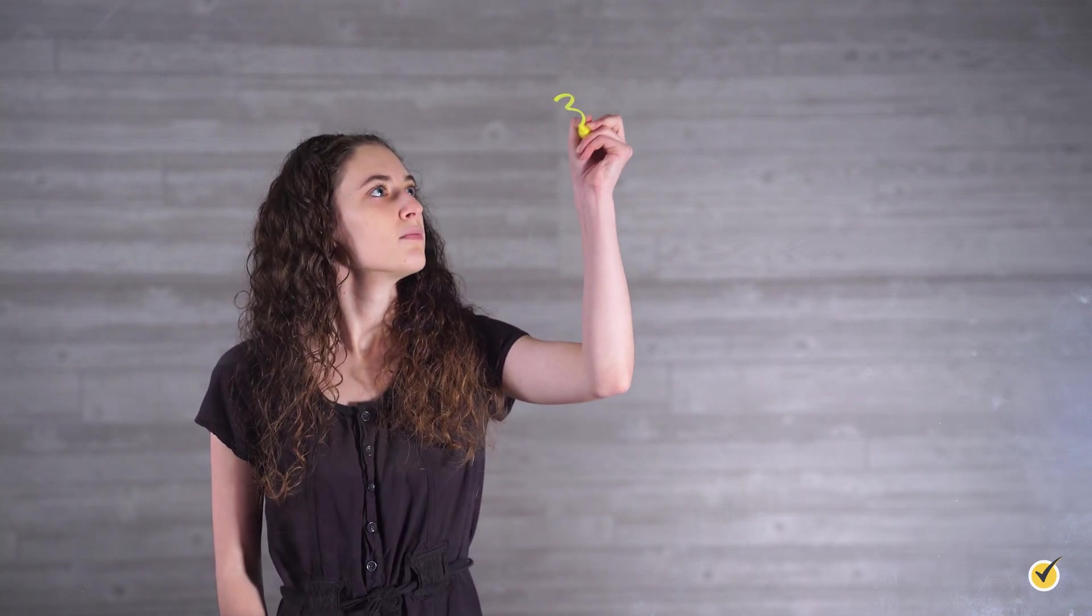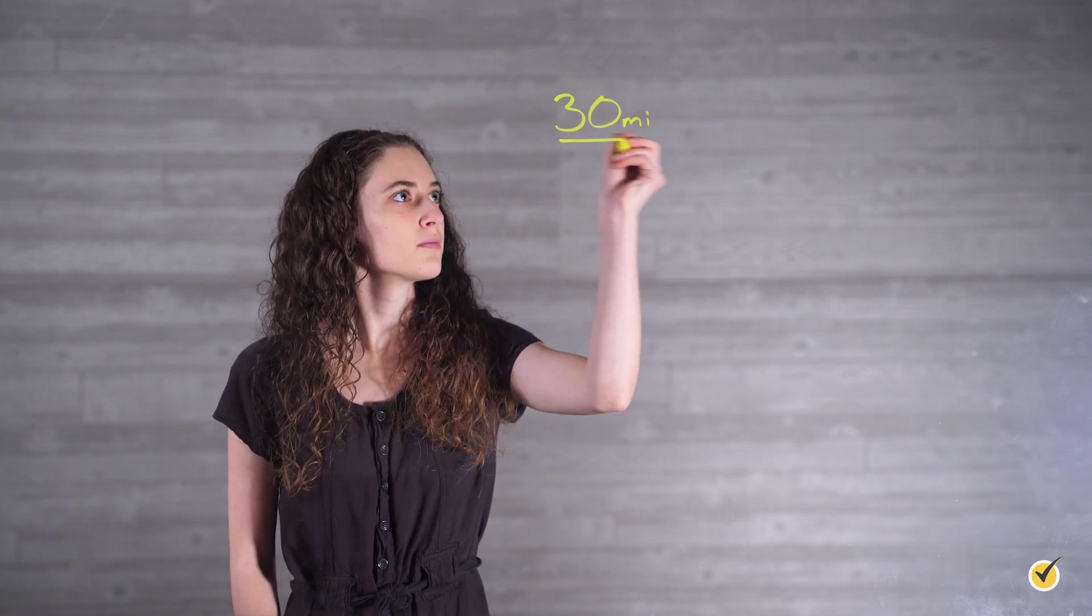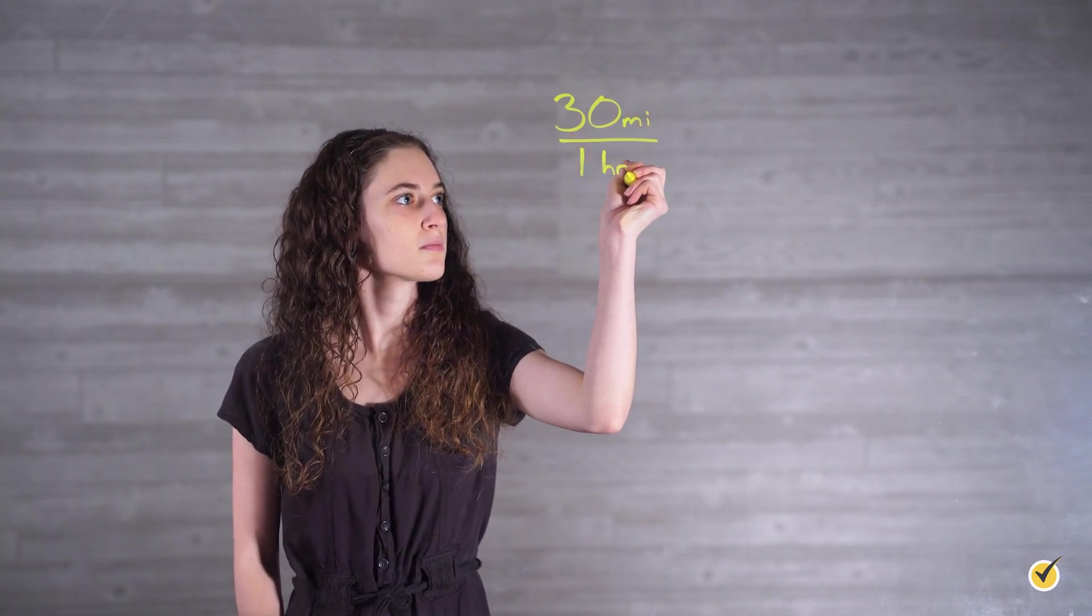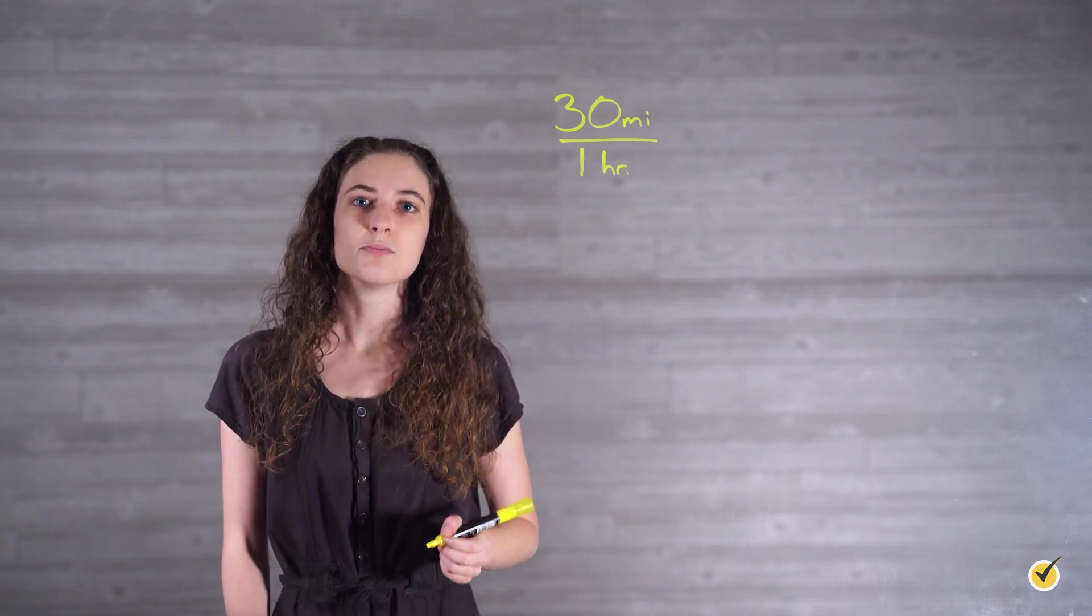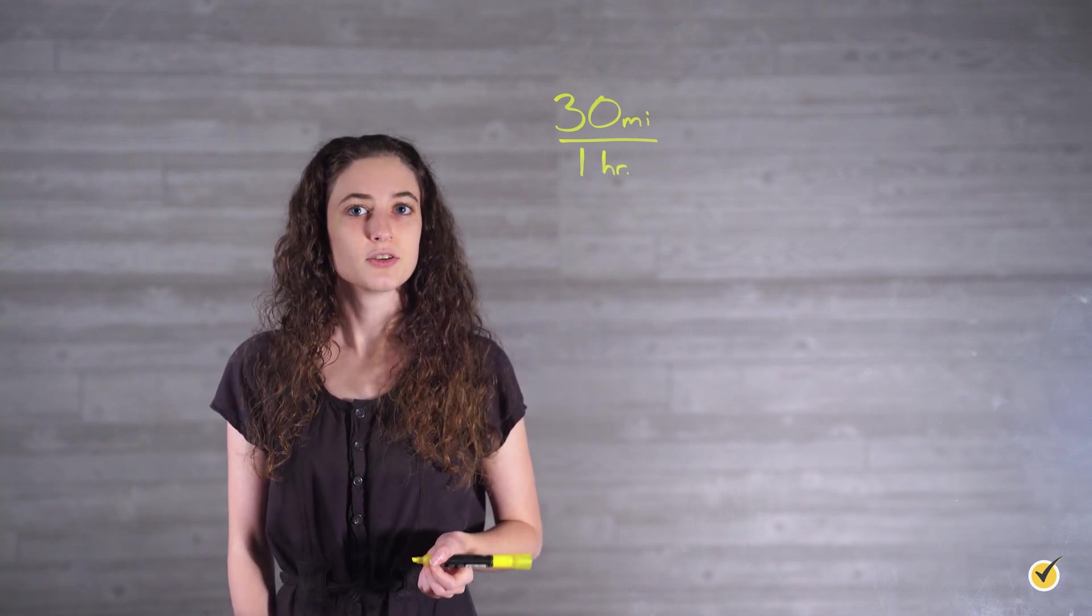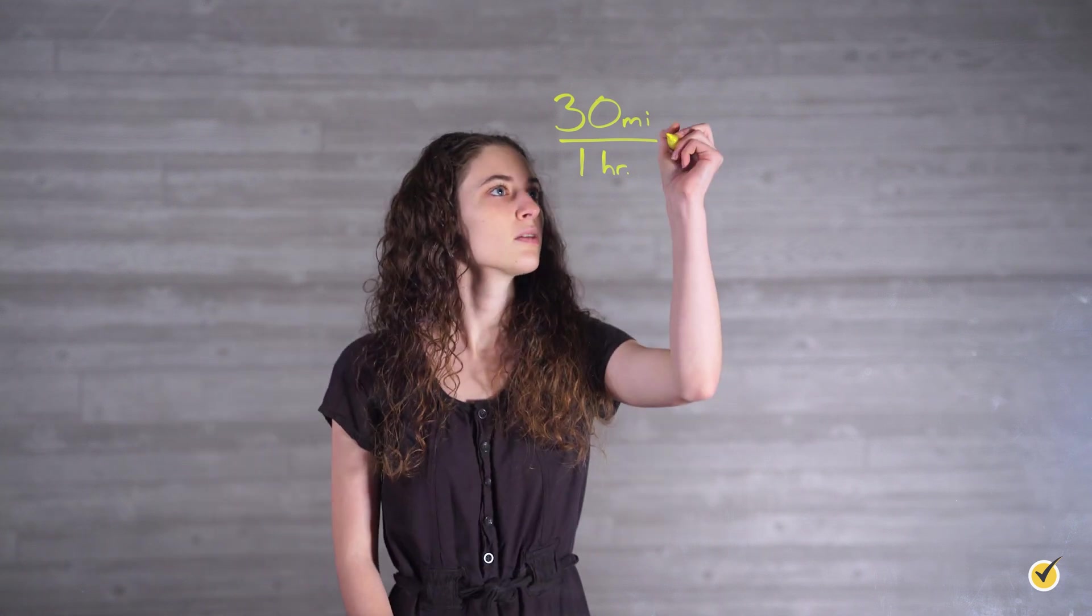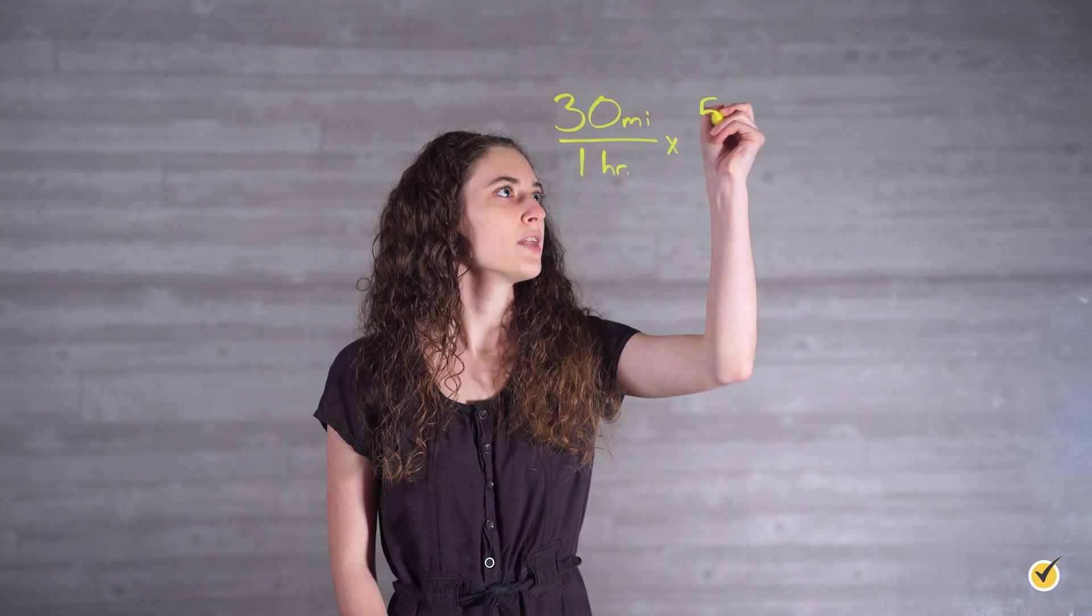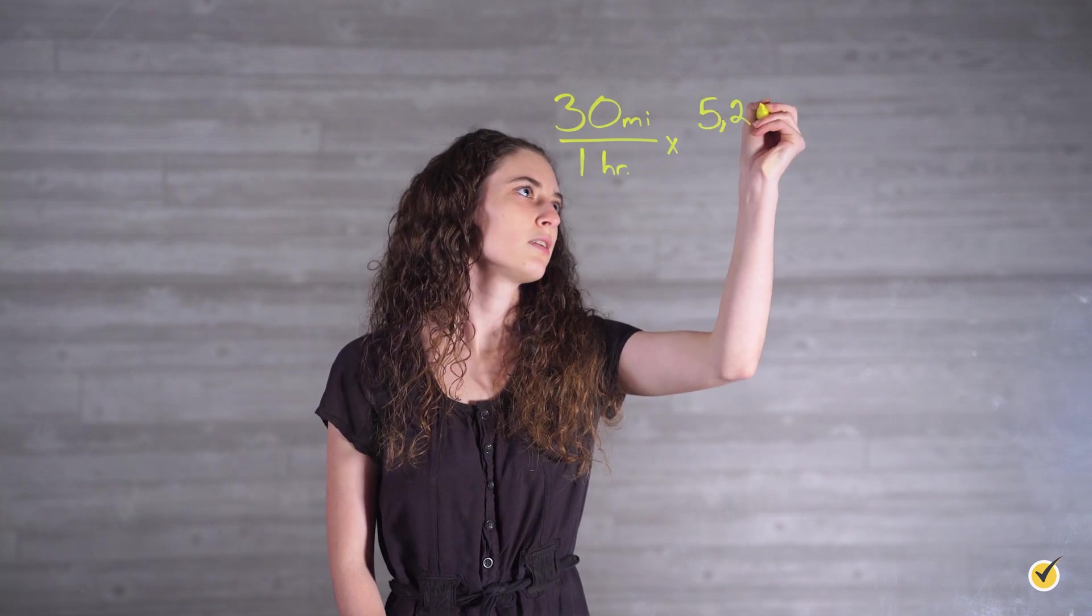First, we write our known value as a fraction. Notice that this is in miles per hour, so we are going to write the miles part on top and the hour part on bottom. She travels 30 miles in one hour, so we'll write it like this. Now we want to multiply by our conversion factors. Remember, we have two different conversion factors, so we need to be sure to include both in this step.